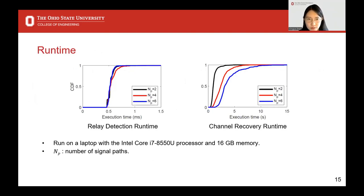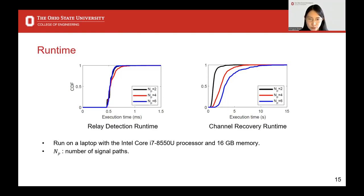We test the runtime of our system and how it changes with signal path numbers. The relay detection module's runtime does not increase with signal path numbers because neural network runtime is mostly decided by the network structure, not input values. The runtime is less than 1 ms in our test environment, making it practical for real-time processing. The channel recovery module's execution time increases significantly with the number of signal paths, mostly due to the increased number of variables in the optimization step. We believe the recovery module can be implemented with link-based applications on devices with more computing power.